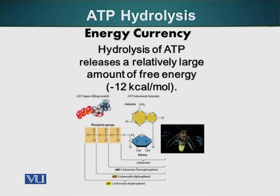This whole molecule we have already seen in one of our previous modules. ATP hydrolysis releases minus 12 kilocalories per mole — that's a huge amount of energy. This energy can be used to make the processes that require energy feasible.